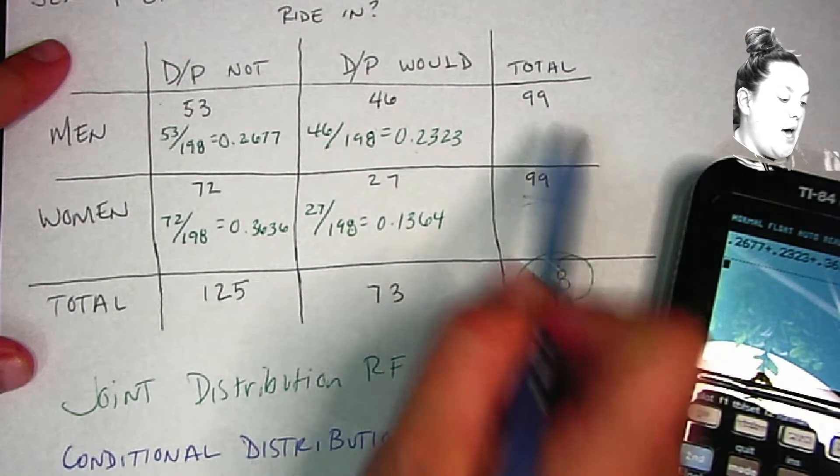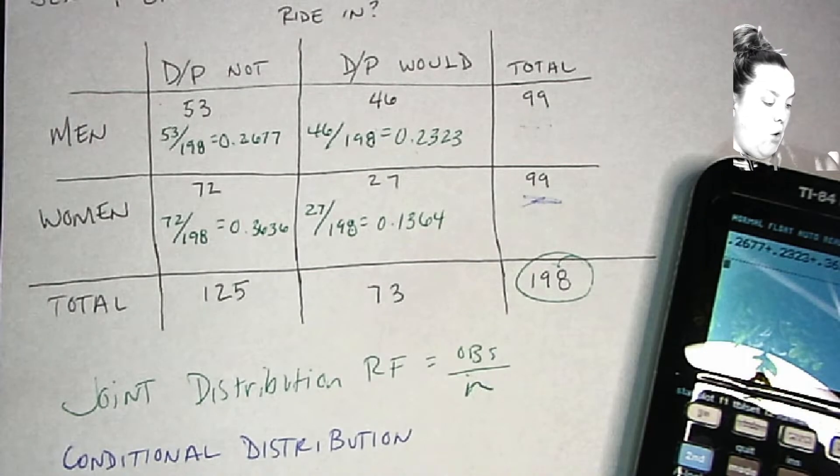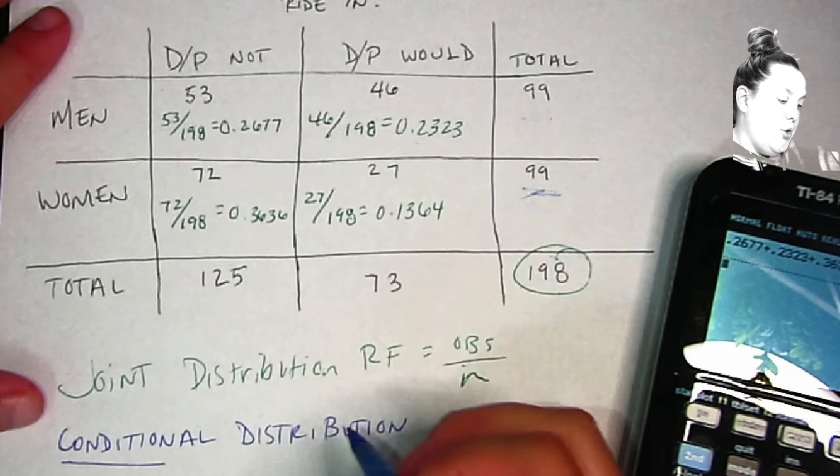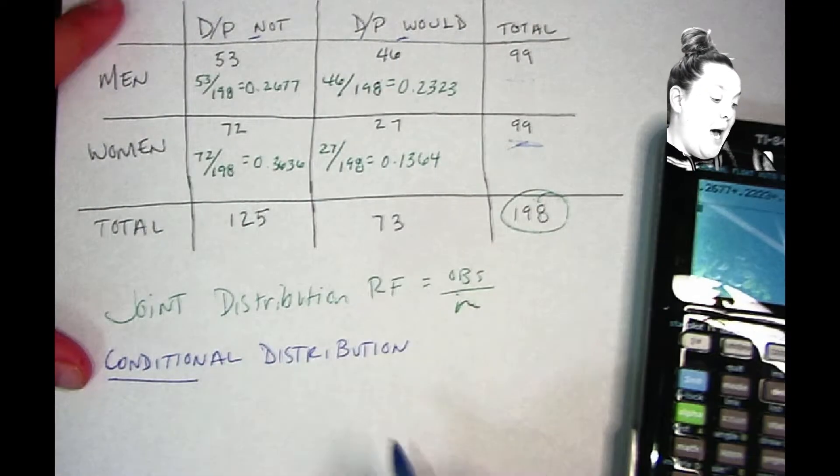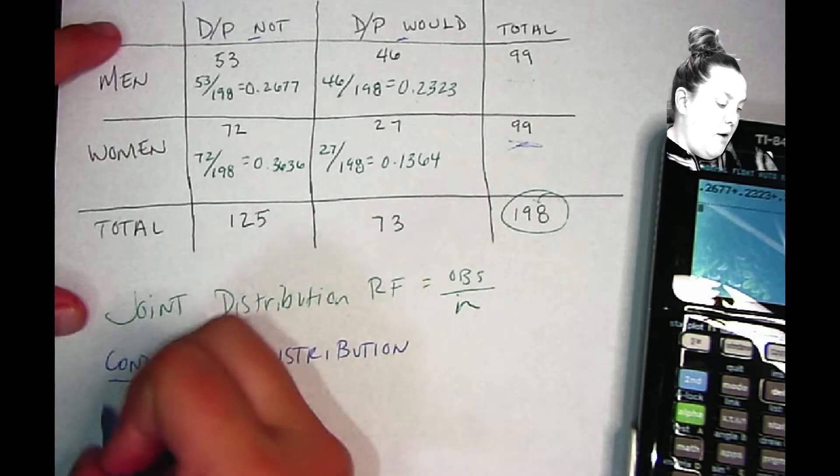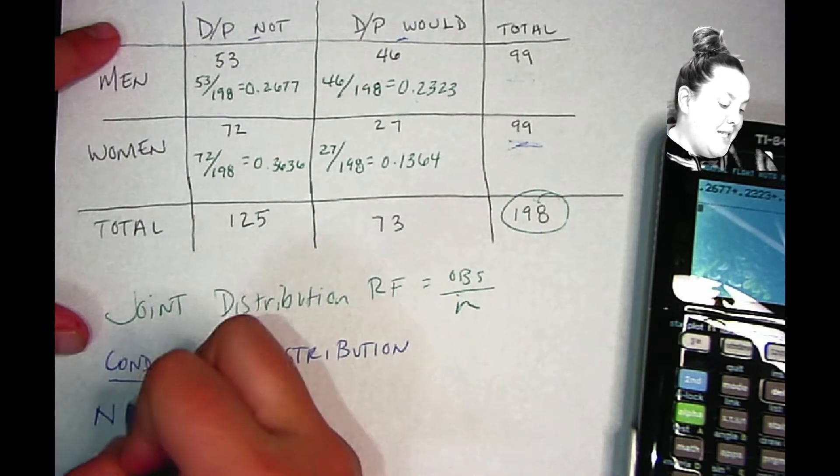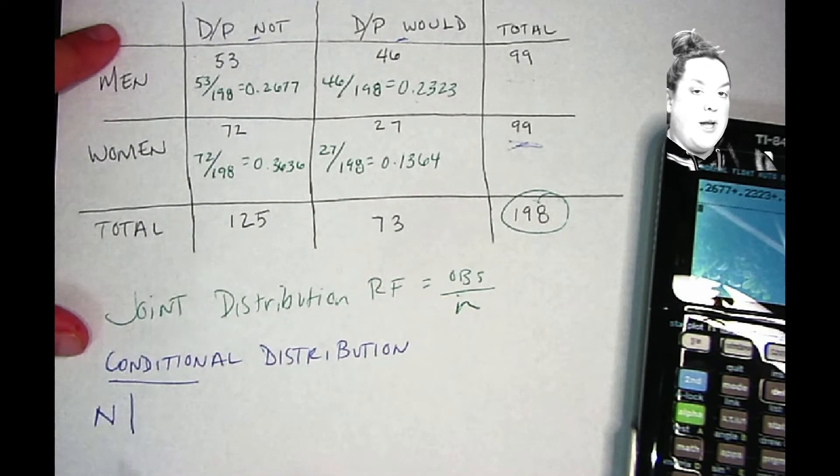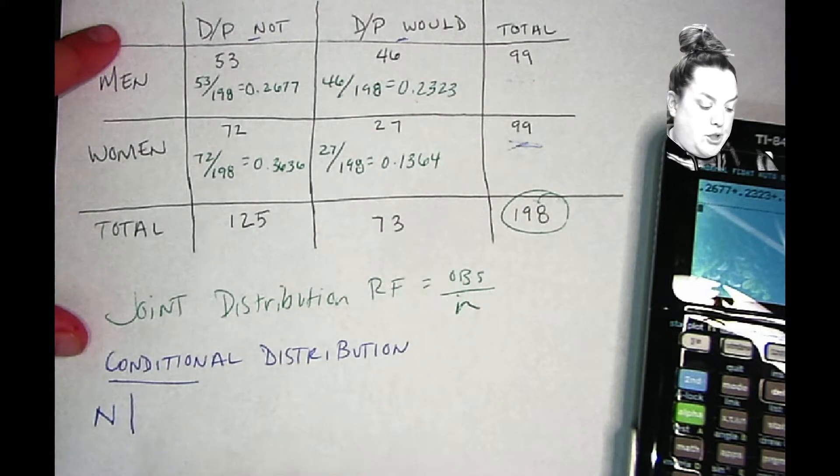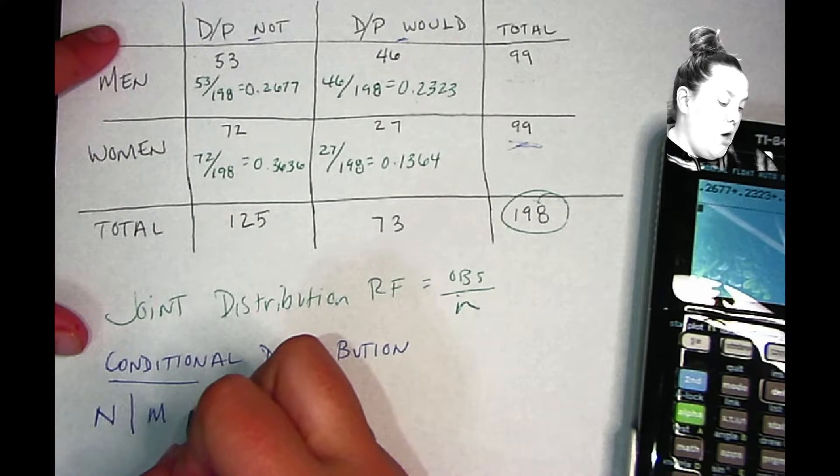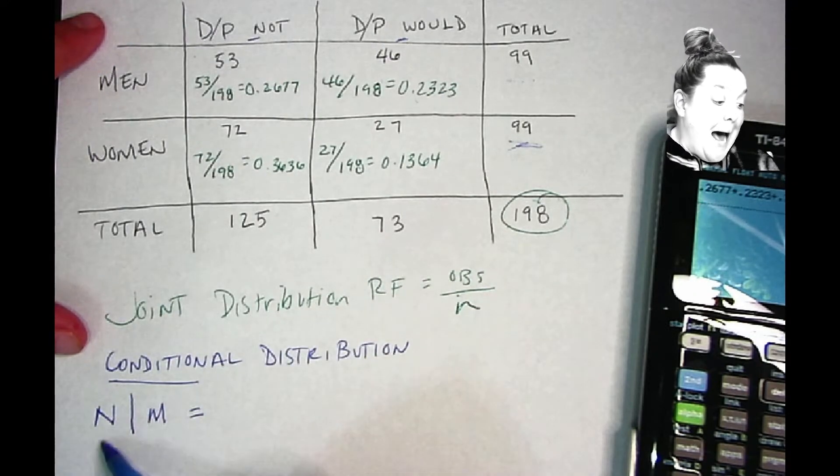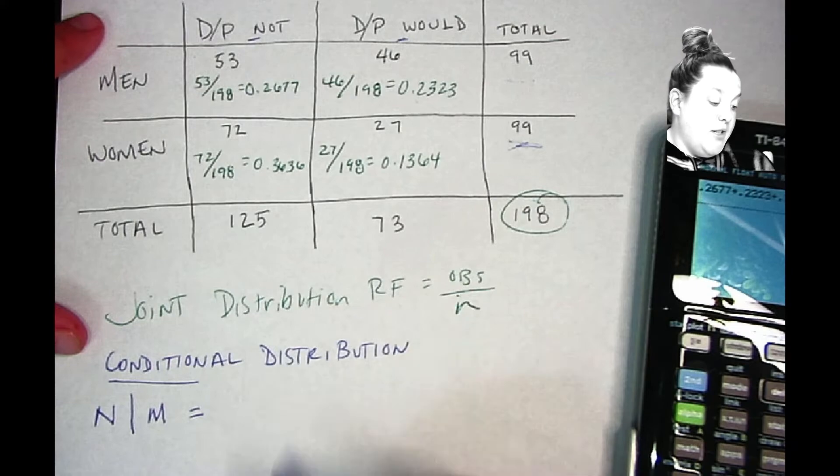I'm going to calculate it based on the total that they have in their row. So if I were to do N for not and W for would, so if I was to do not given—and remember that straight line is telling you what the condition is—so given being male.